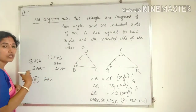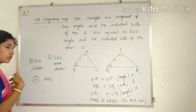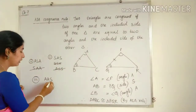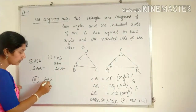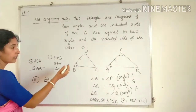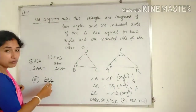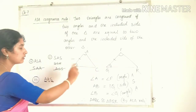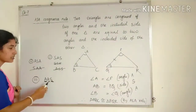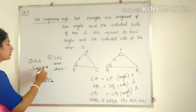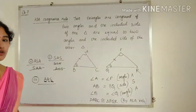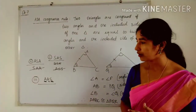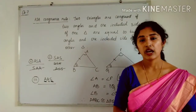In AAS, one angle equals the corresponding angle of the other triangle, the second angle equals the second angle of the other triangle, and then a side of one triangle equals a side of the other. However, unlike ASA, in AAS the side does not need to be included between the two angles — it may be any side, such as BC or AC. So our three criteria are: SAS, ASA, and AAS. Using these three rules, we can prove that triangles are congruent.